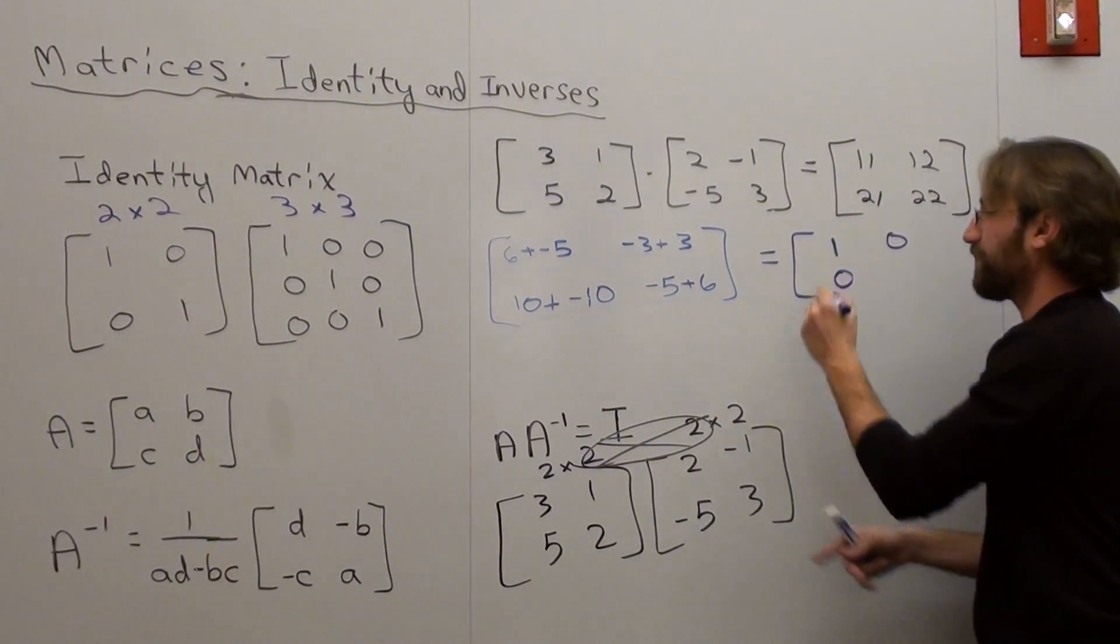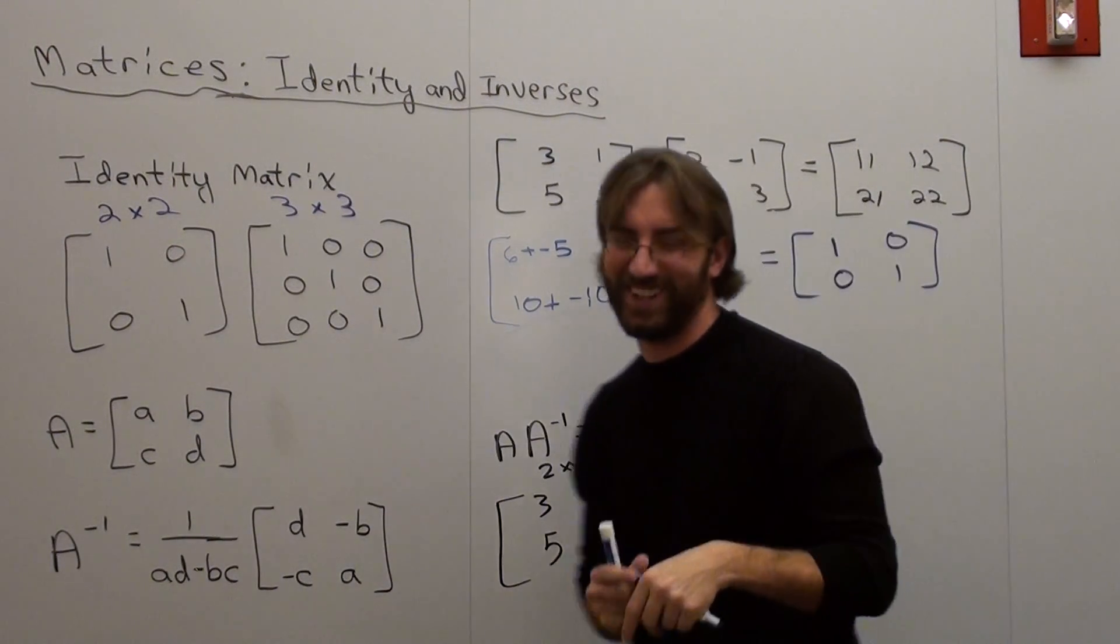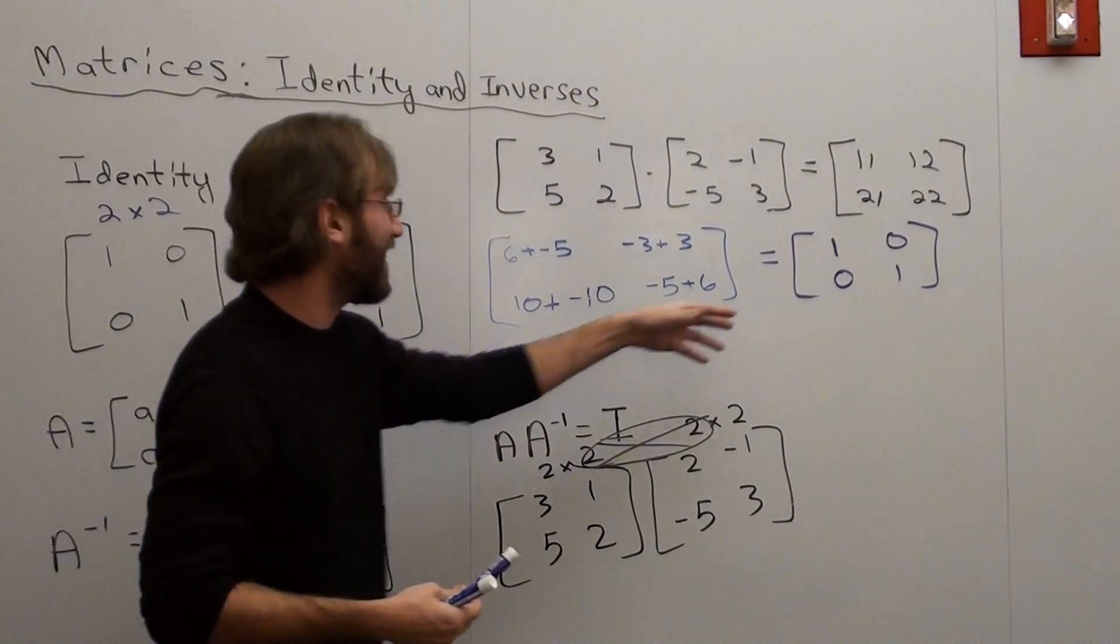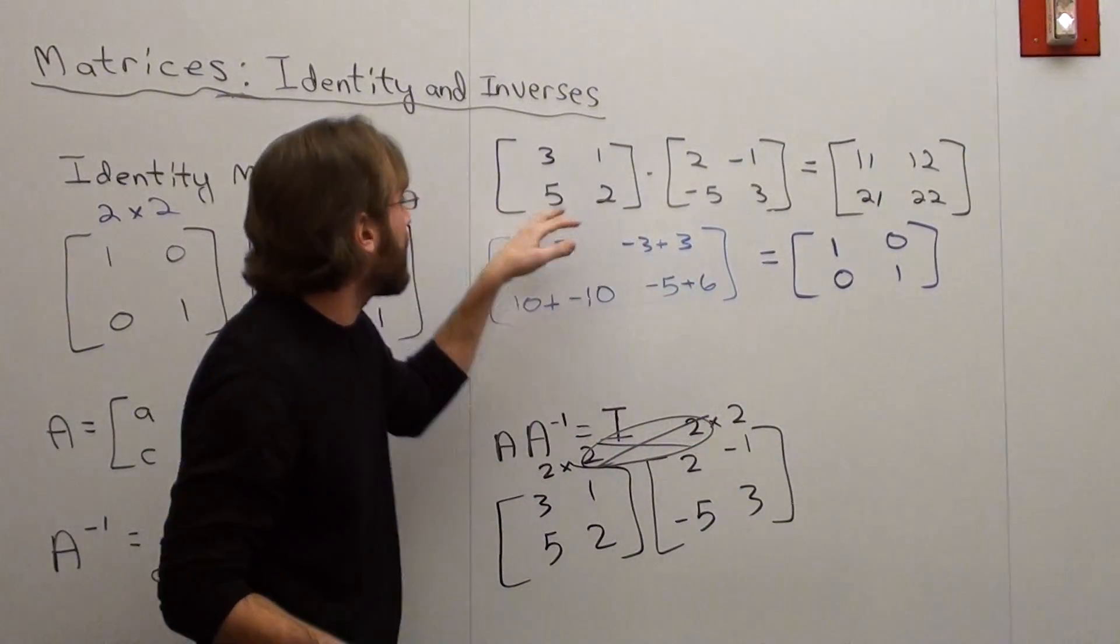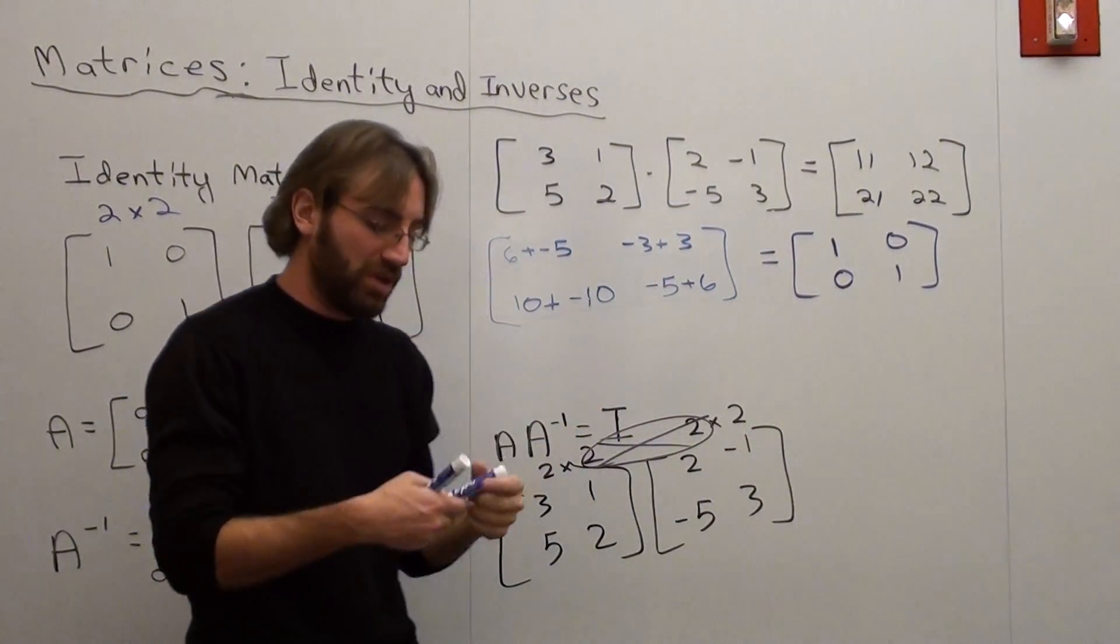6 plus negative 5 is 1, and then negative 3 plus 3 is 0, and this is where the student's face got a little red. I don't know if it was embarrassment or anger or whatever, but whatever. 10 plus negative 10 is 0, and negative 5 plus 6 is 1. And I was like, oh my gosh, what does that equal? And she was like, the identity matrix. I'm like, yeah, I mean, that's how it goes. If you take a matrix times its inverse, it's going to equal the identity matrix. That's how it works.